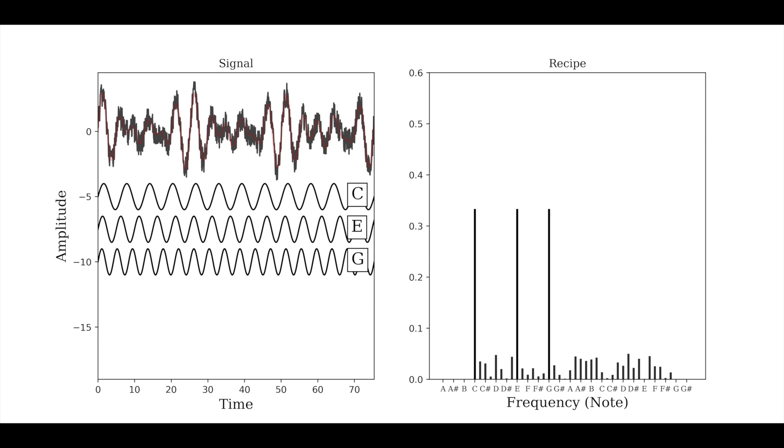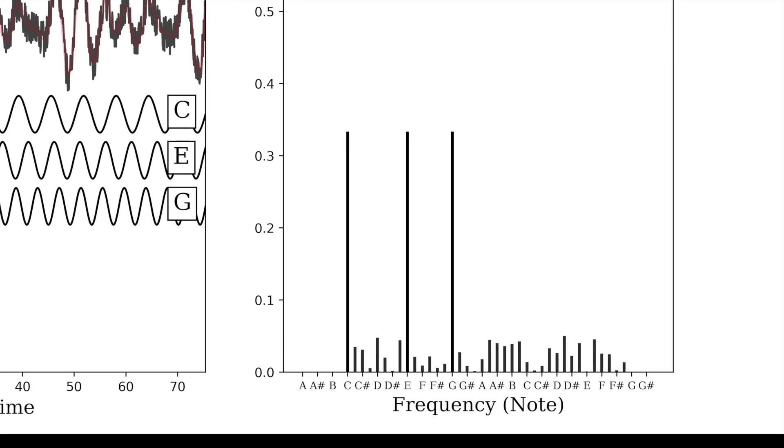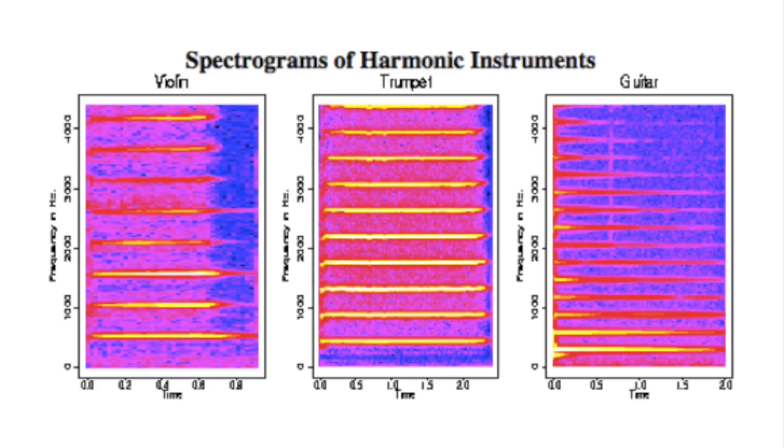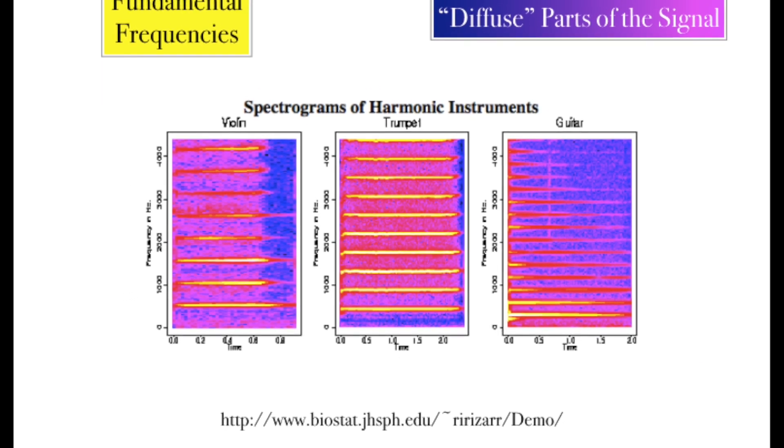However, if we look at the waveform of a real chord, we see that the signal is far from perfect. In fact, these deviations from perfection are what differentiate the same notes being played on a trumpet versus a violin or a guitar. Let's call these imperfections in the signal the diffuse part of the signal.